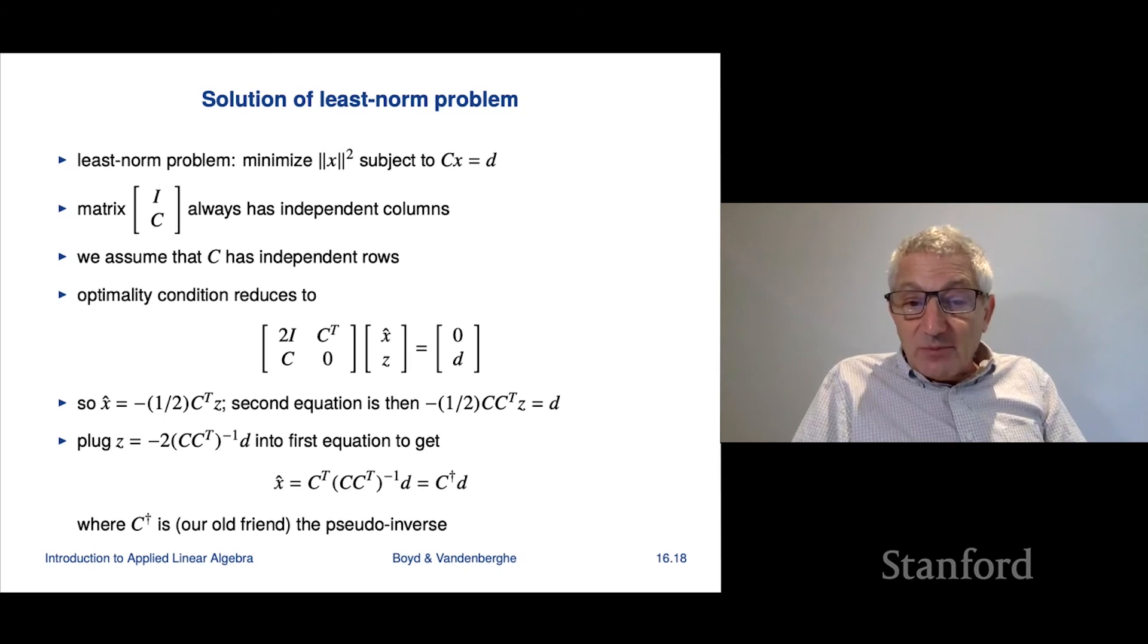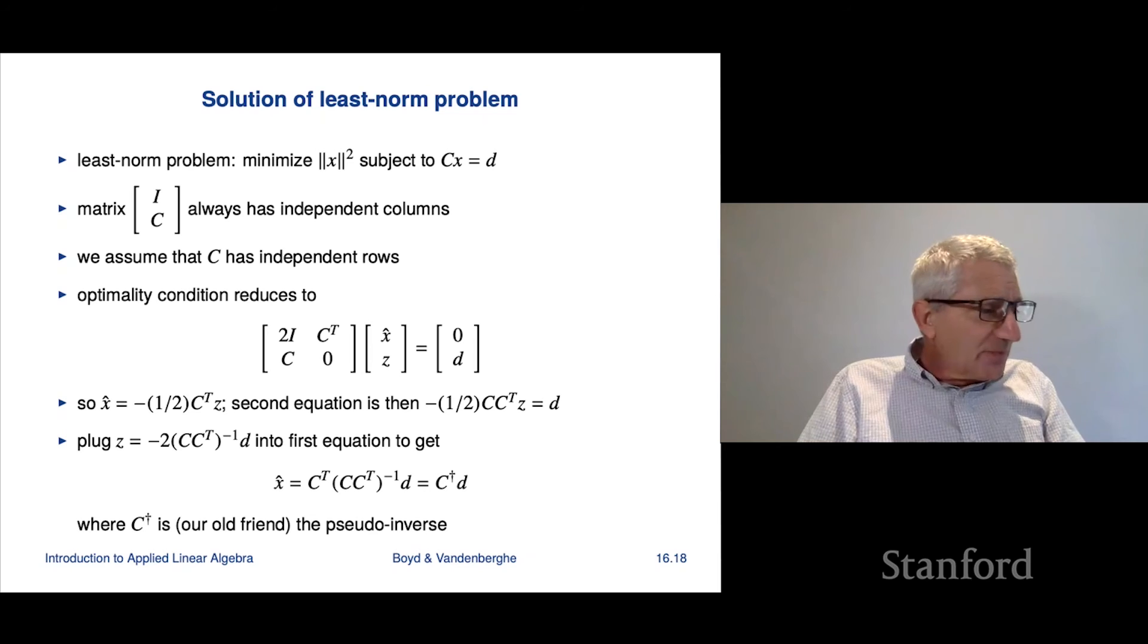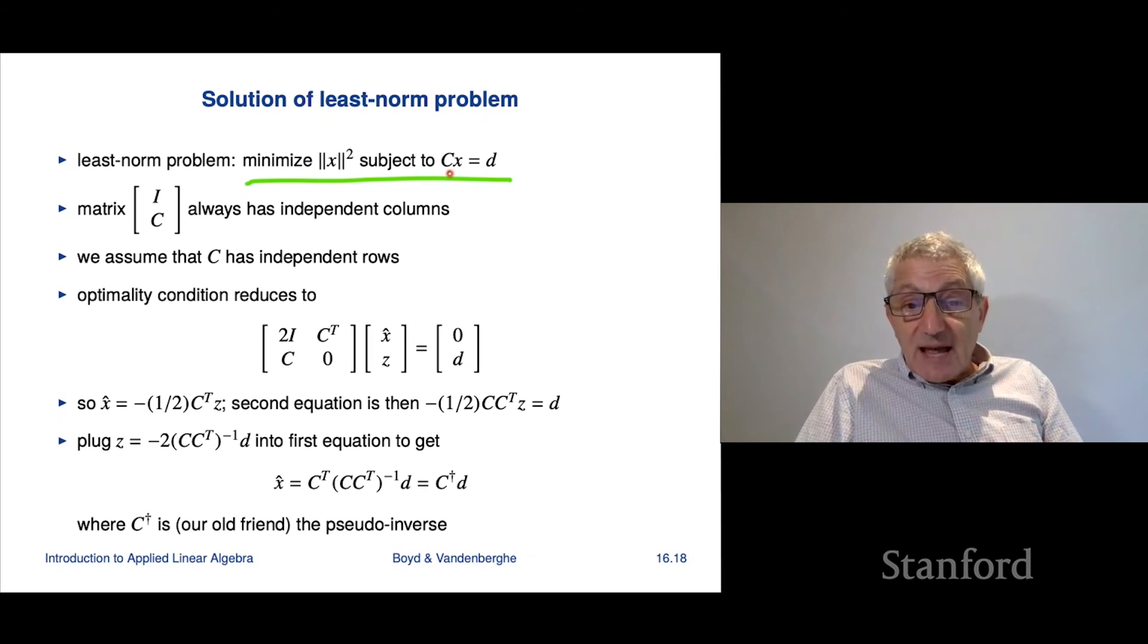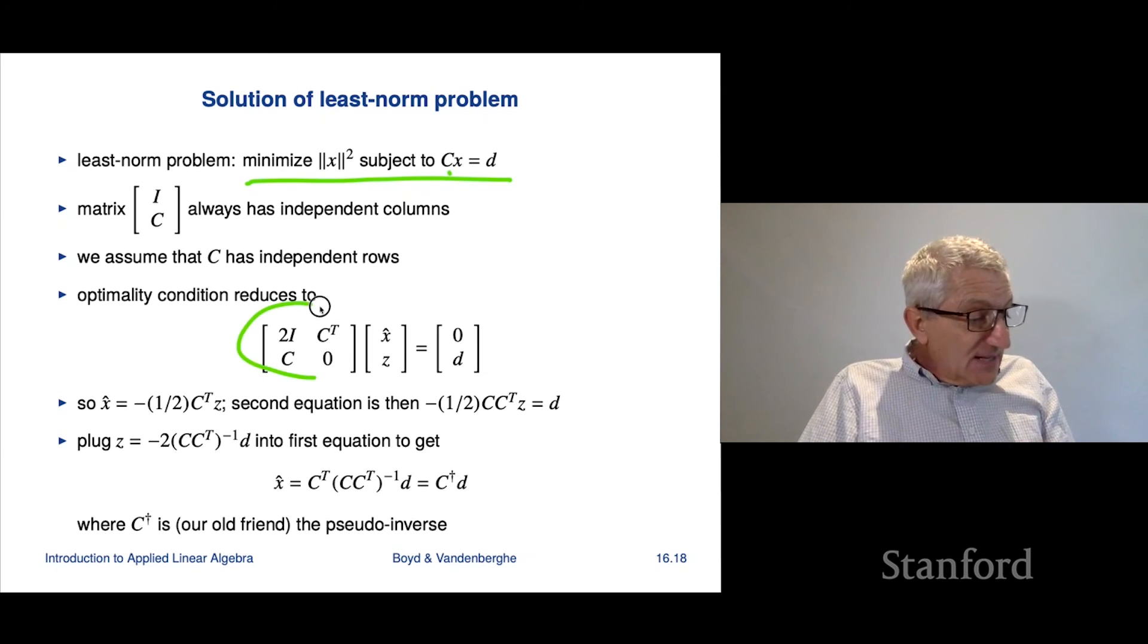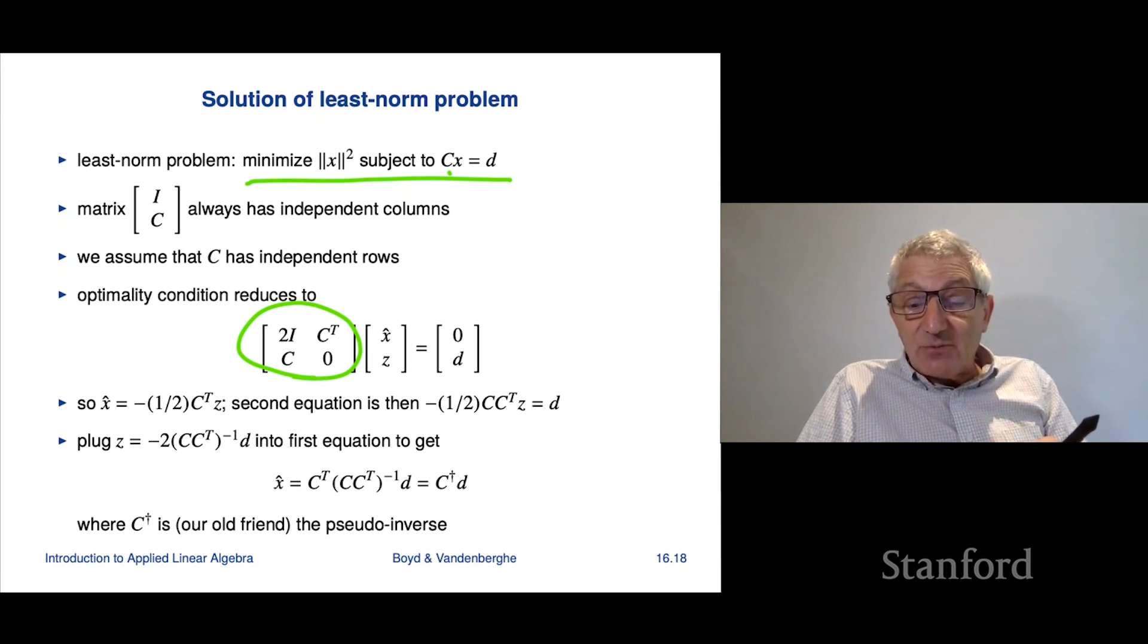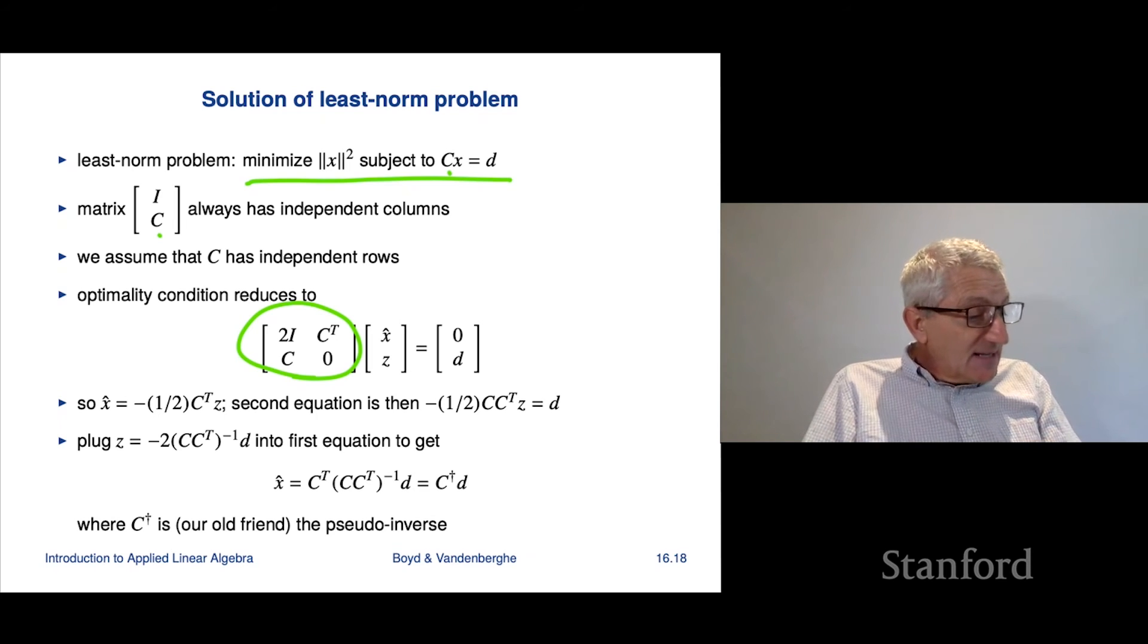Now let's turn to the least norm problem. We'll see a beautiful thing emerges and something pretty cool that ties a lot of the stuff we've seen together. So the least norm problem says minimize norm x squared subject to c x equals d. Well, some pretty cool things happen. Number one, when we form the KKT matrix, which is this, it's actually—assuming c has independent rows, this matrix is always invertible. So because i stacked on top of c has independent columns. I mean, of course, because of the—if you look at the i on top. We're gonna assume c has independent rows and that says you get this.